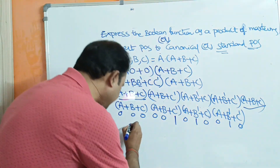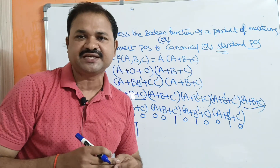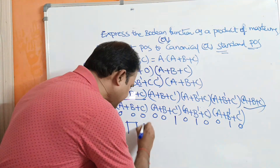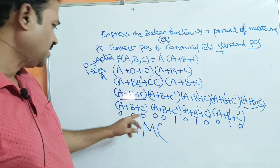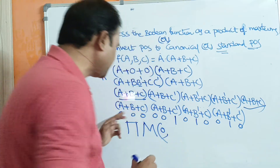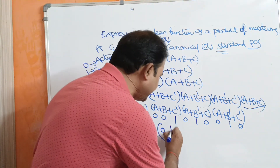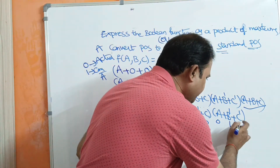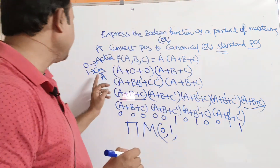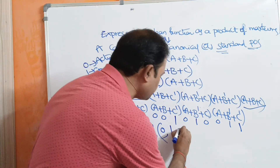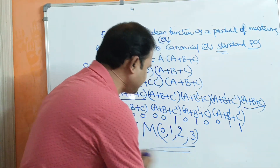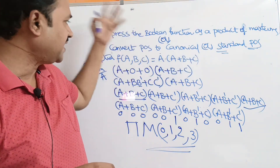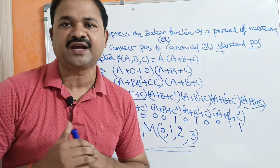Now write in terms of pi notation, because pi represents the product operation and we have a product operation here. Max term is represented with capital M. The smallest decimal number here is zero (000 in binary). Next, 001 in decimal notation is 1. Then 010 is 2, and 011 is 3. In this way we can convert POS to canonical or standard POS and express it in decimal notation.